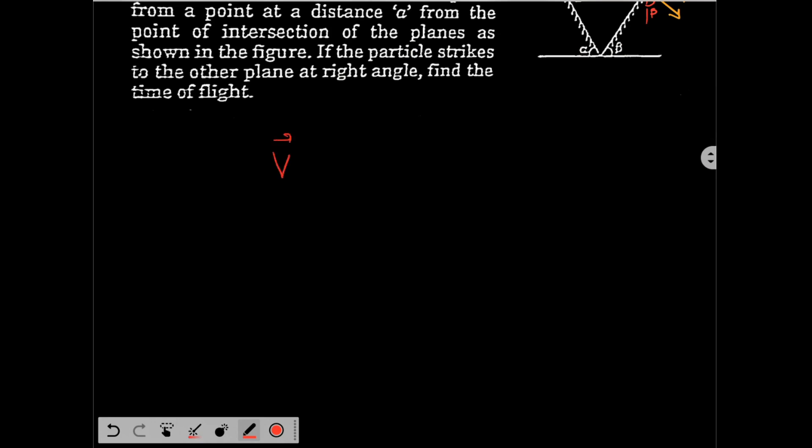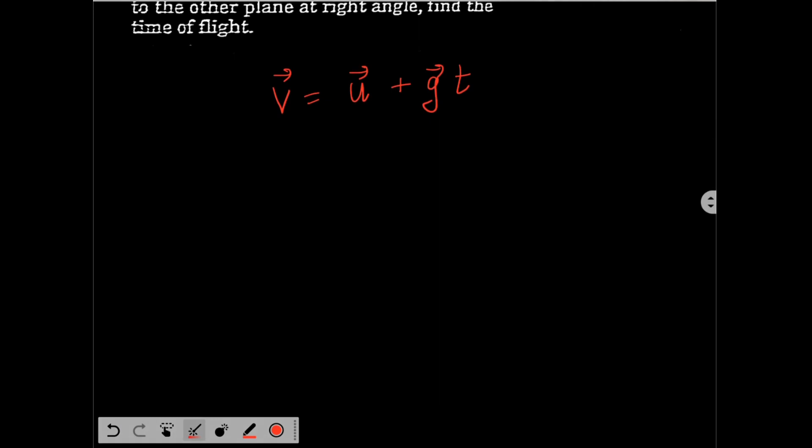We can use this equation: v vector is equal to u vector plus g vector t. Final velocity vector, initial velocity vector, and vector of acceleration due to gravity. I will draw my vector diagram according to this equation. v vector is given by sum of these two vectors. So, let's draw the vectors.